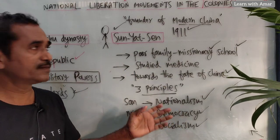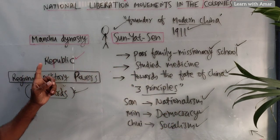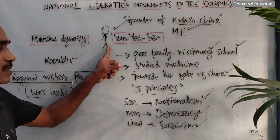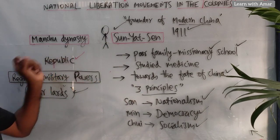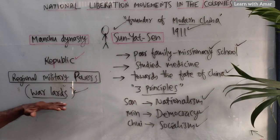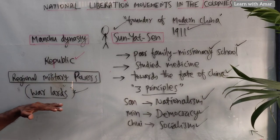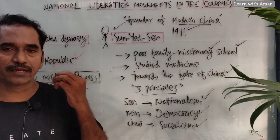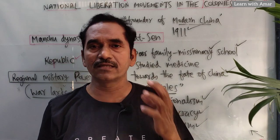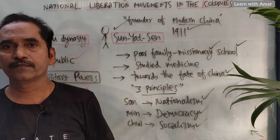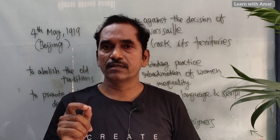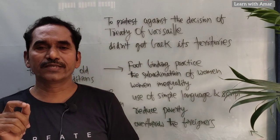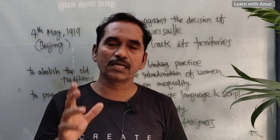These are all his aspirations. But he failed to form the government — he was unable to form a Republic government in China. So warlords were ruling China; total China was under the control of warlords. The political and social situation in China was very unstable.